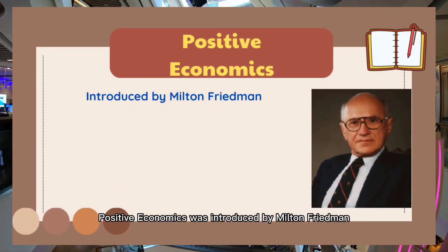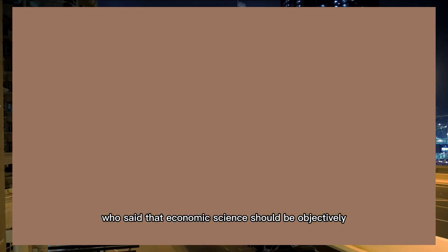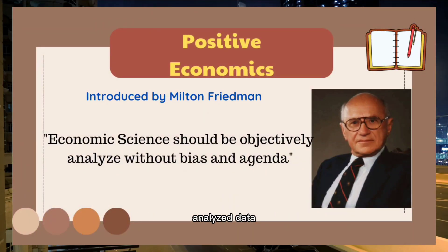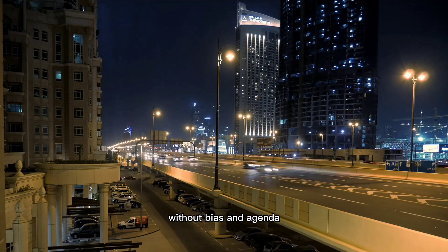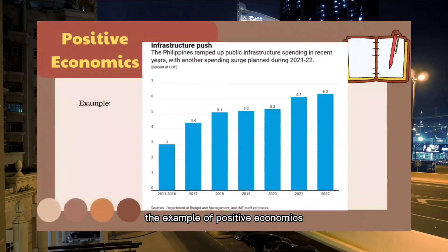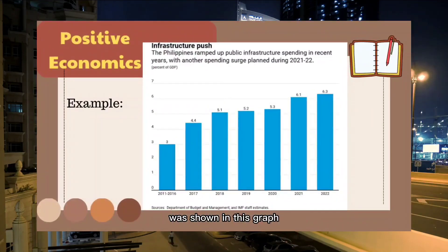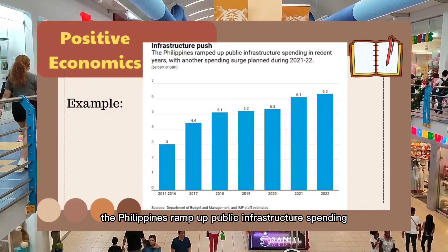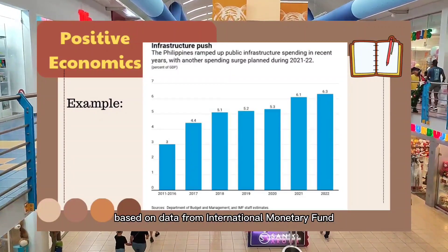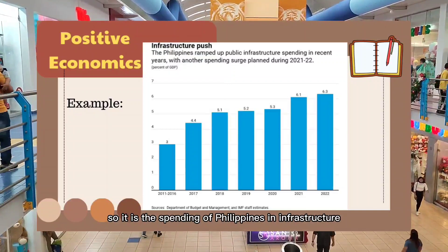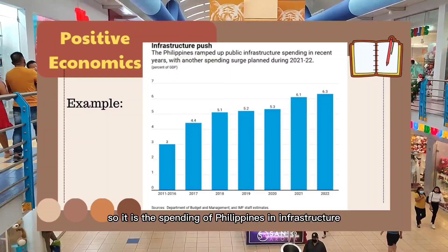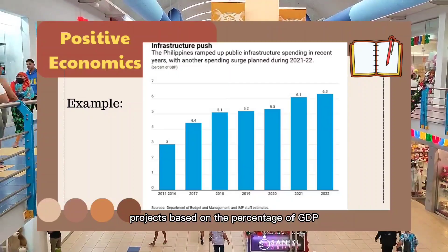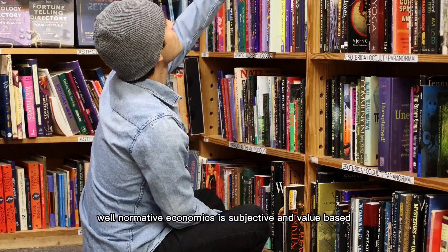Positive economics was introduced by Milton Friedman, who said that economic science should objectively analyze data without bias or agenda. An example of positive economics is shown in a graph: the Philippines ramped up public infrastructure spending, based on data from the International Monetary Fund, represented as a percentage of GDP.